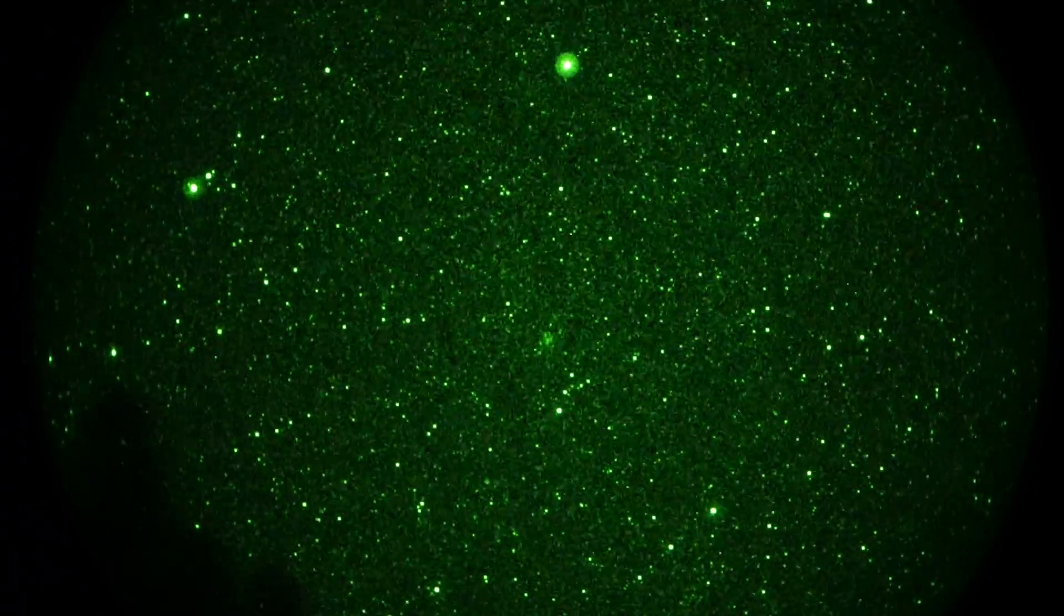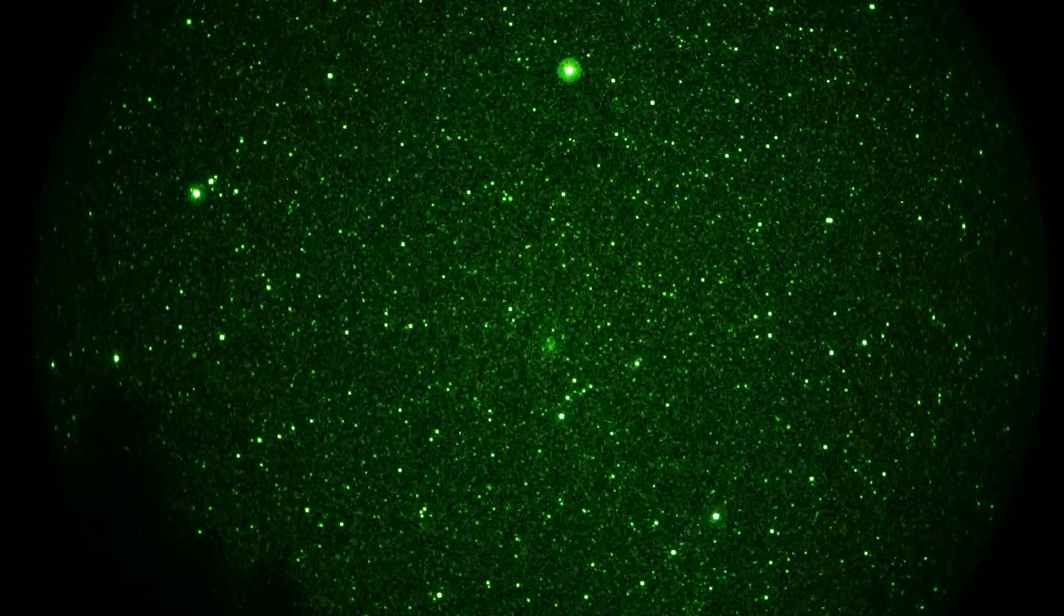All right. I'm going to call it a wrap there. 1/30th of a second shutter ISO 1600. Zeiss Contax 200mm F2 lens. Photonis 4G P43 Phosphor image intensifier. That's going to be it for now.